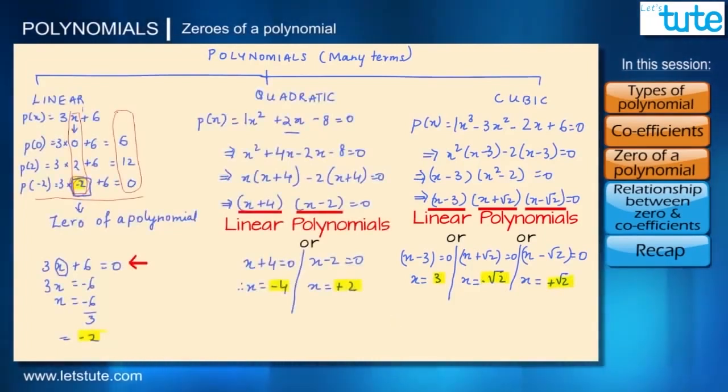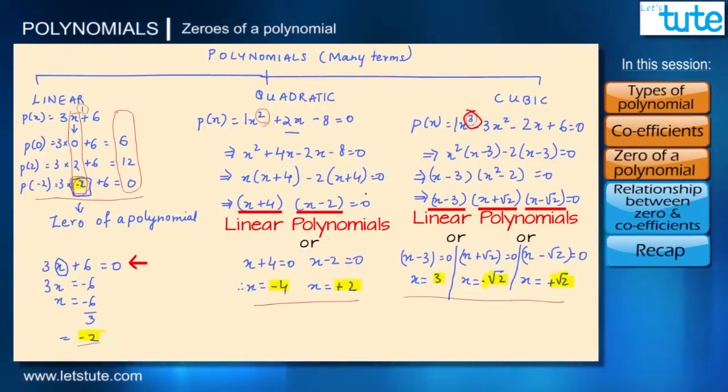By looking at this we can say when we have a linear polynomial, degree 1, we can have one zero of a polynomial. When we have degree 2 for quadratic polynomial, we can have up to two zeros of a polynomial. And when the degree is 3, we can have up to three zeros of a polynomial.